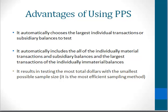There are some pretty big advantages of using this kind of sampling, which is why it's the most common and it's the kind of sampling built into all auditing software. PPS sampling automatically chooses the largest individual transactions and subsidiary balances to test. That means it automatically includes all of the individually material transactions — you don't have to go and check and see if it captured those. And it automatically includes the largest transactions of the set that are individually immaterial. It doesn't just take any old 100; it includes the 100 largest. Therefore, it results in testing the most dollars with the smallest possible sample.